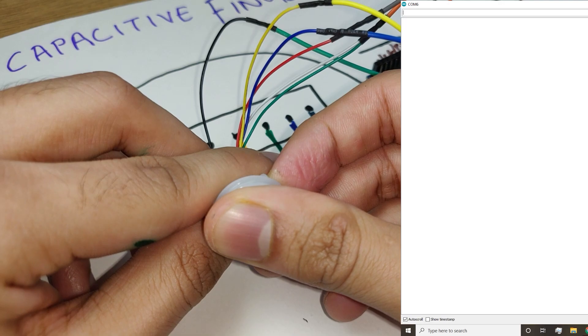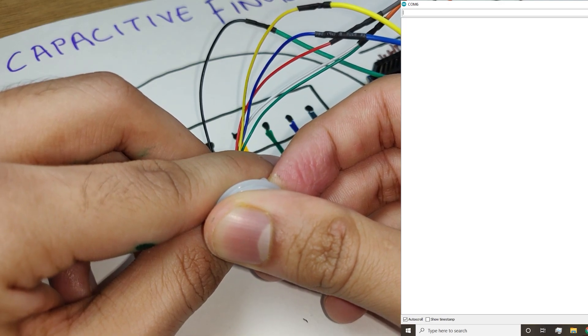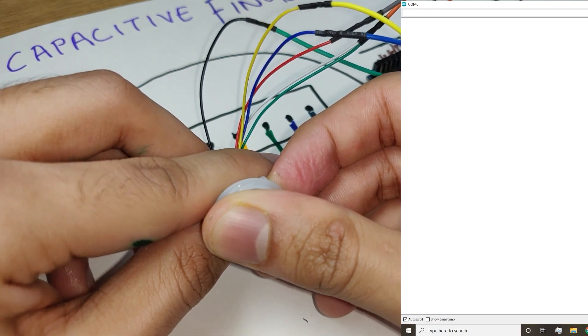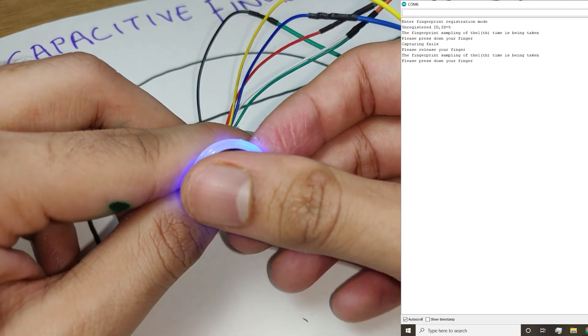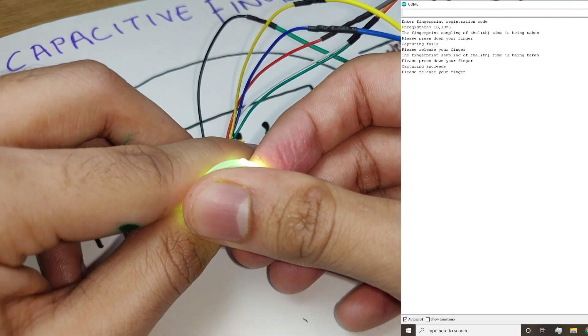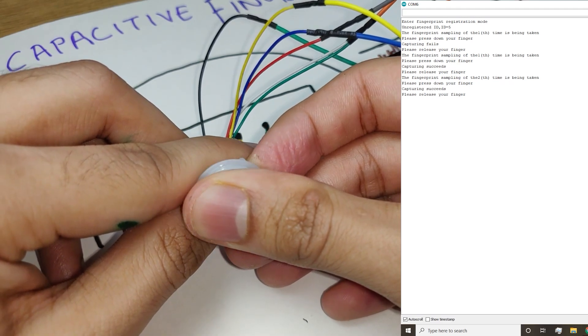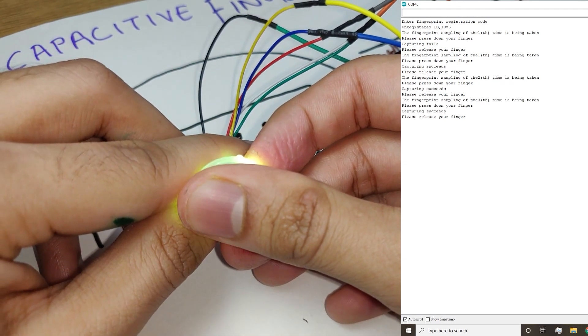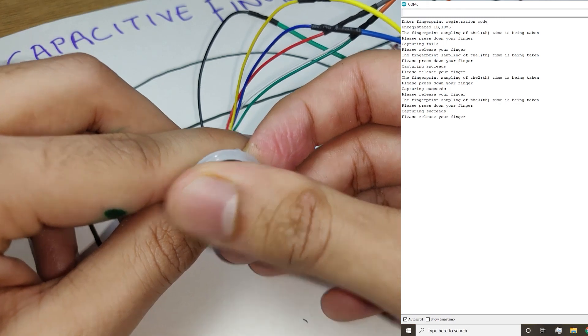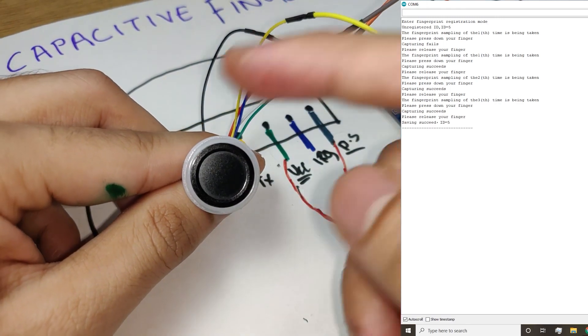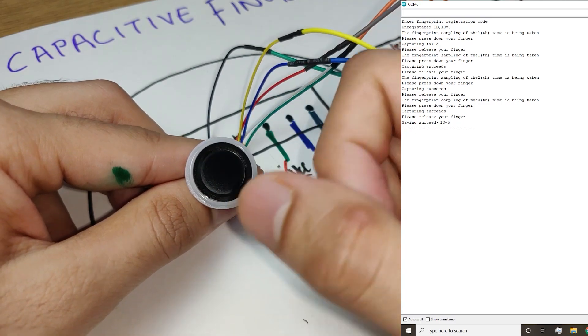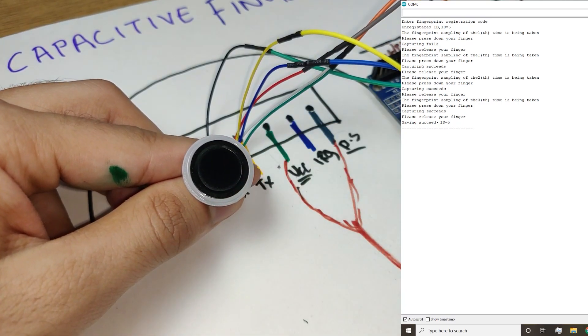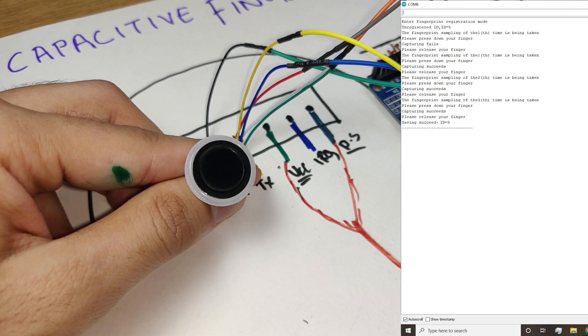So first we'll add a fingerprint. For that you need to touch the fingerprint scanner, wait for it, and once the three yellow lights blink you can release it. You can touch it again, release it, touch it again, and then you need to touch it last for the third time. And then it says green. Green is an indication which says that the fingerprint got recorded and we can see the same on the serial monitor as well. It's ID5.